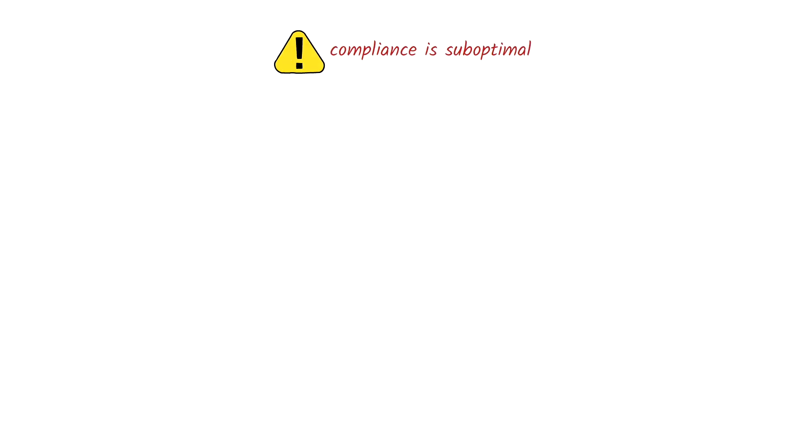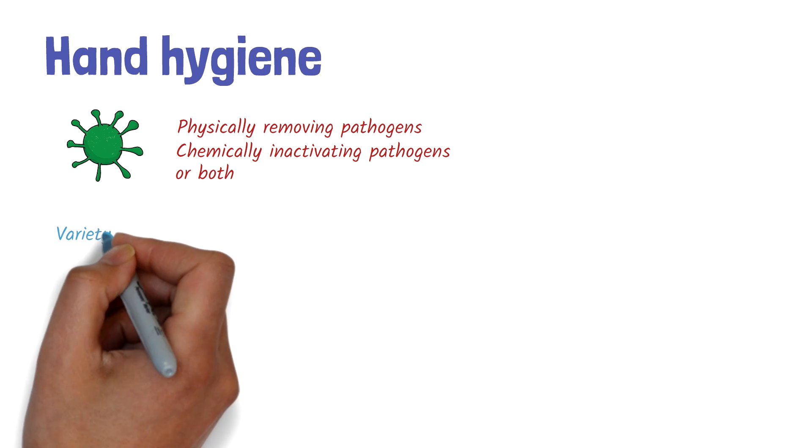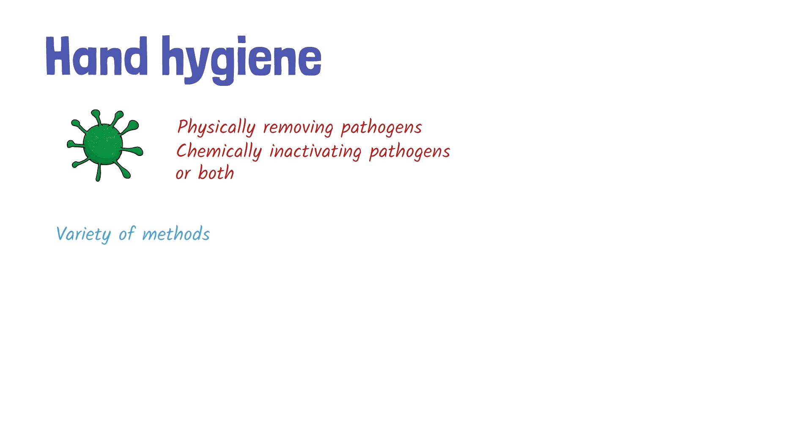Let's take a closer look at hand hygiene. Hand hygiene can be done by physically removing pathogens from the hands, chemically inactivating them, or both. This can be achieved through a variety of methods, and in this video, we'll focus on hand washing with soap and water and using an alcohol-based hand rub. The way they work is quite fascinating.